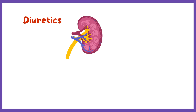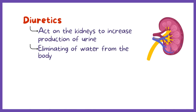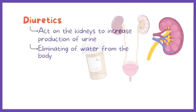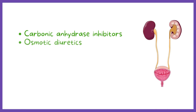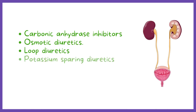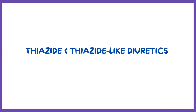Diuretics are medications that act on the kidneys to increase production of urine, and therefore elimination of water from the body. There are five main types of diuretics: carbonic anhydrase inhibitors, osmotic diuretics, loop diuretics, potassium-sparing diuretics, and thiazide and thiazide-like diuretics.